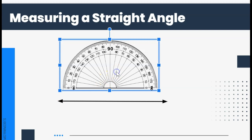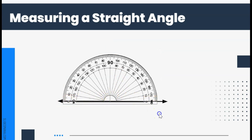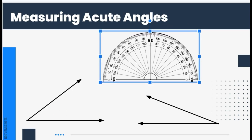Let's look at how we know a straight line is 180 degrees. I take my protractor and bring it down onto the line so it covers the bottom line completely. Looking at the outside numbers from zero all the way around, it says 180 degrees. The inside numbers also go all the way around to 180 degrees.